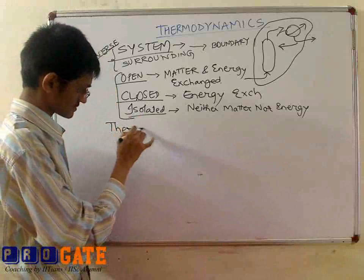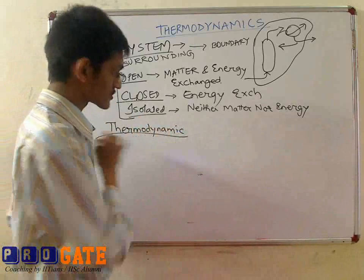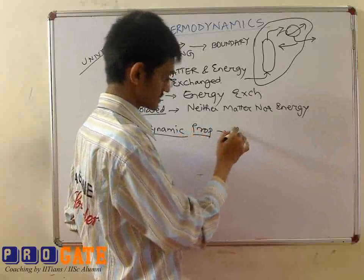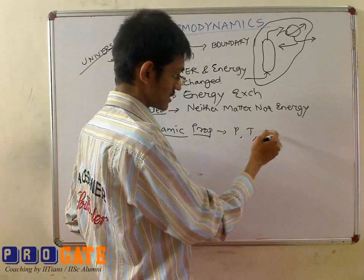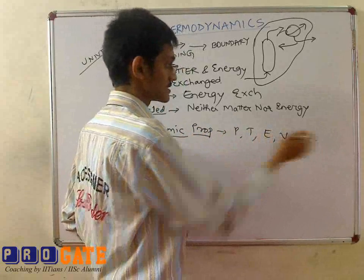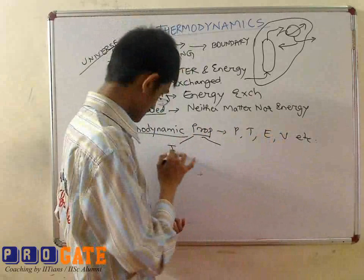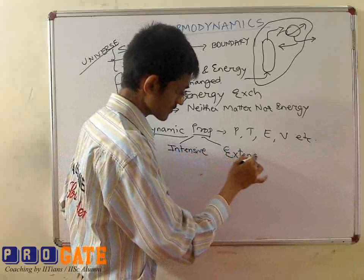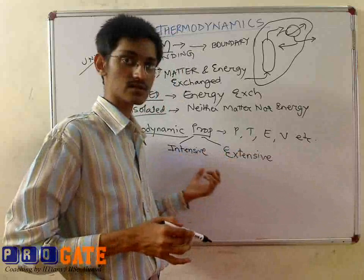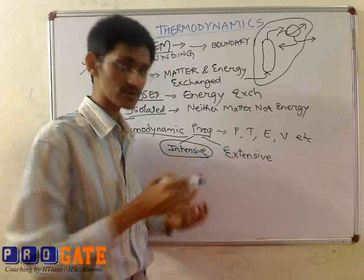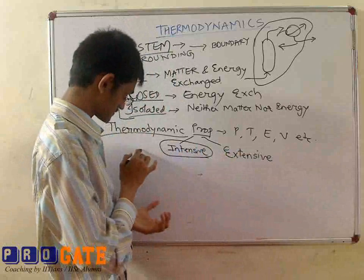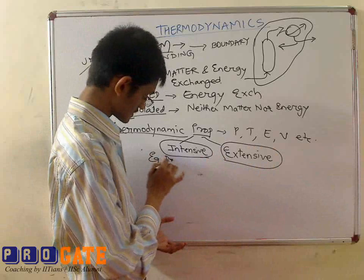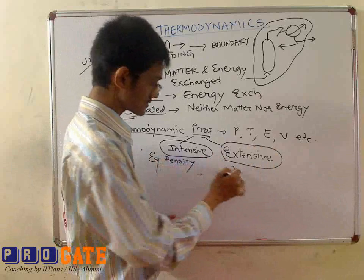Then we have thermodynamic properties. To characterize any system you need some properties. In thermodynamics, what we consider are pressure, temperature, entropy, volume, etc. These thermodynamic properties can again be classified as intensive and extensive. Intensive properties are those which do not depend on the mass or the size of the system. Extensive properties depend on the mass and size of the system. An example of intensive is density; an example of extensive is volume.